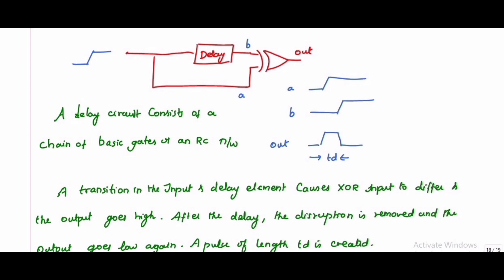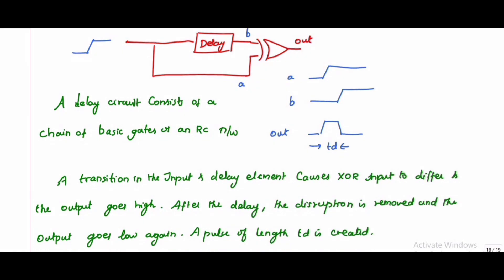These two inputs are XORed and you're getting the output. Whenever both signals are identical, the XOR gate will produce zero output. If there is any change, it will produce one. Here you can see a delay circuit which consists of a chain of basic gates or an RC network.